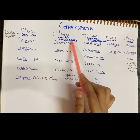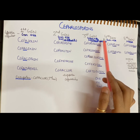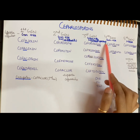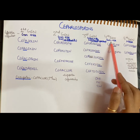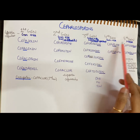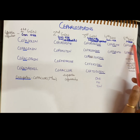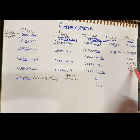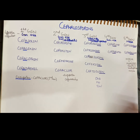Regarding spectrum of activity: first generation cephalosporins are effective against gram-positive bacteria. Second generation covers both gram-positive and gram-negative. Third generation has the widest spectrum — gram-positive and gram-negative. Fourth generation is primarily effective against gram-negative organisms.